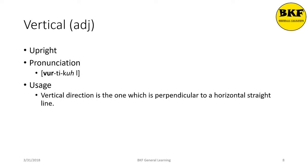Vertical is an adjective. It means upright, and in pronunciation the stress is on the 'verse' syllable. Here's the usage: 'Vertical direction is the one which is perpendicular to the horizontal straight line.'